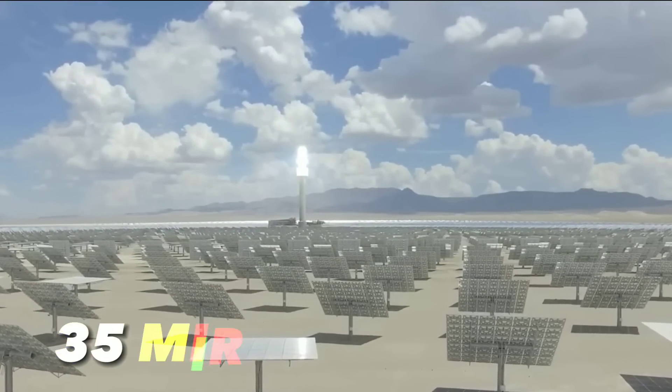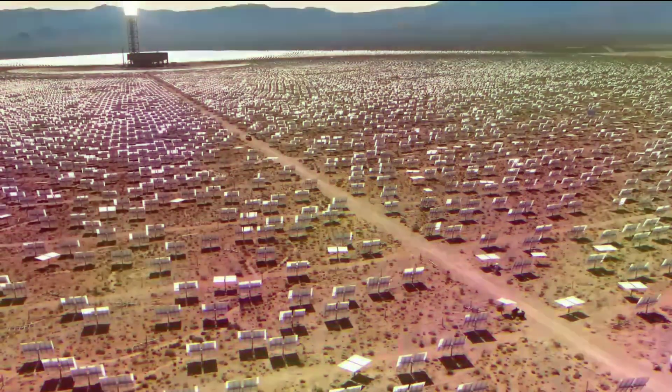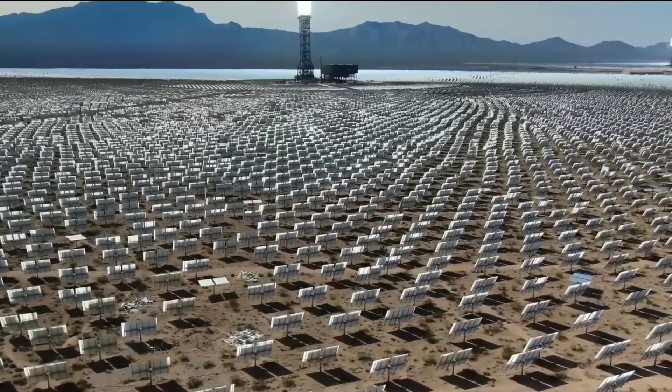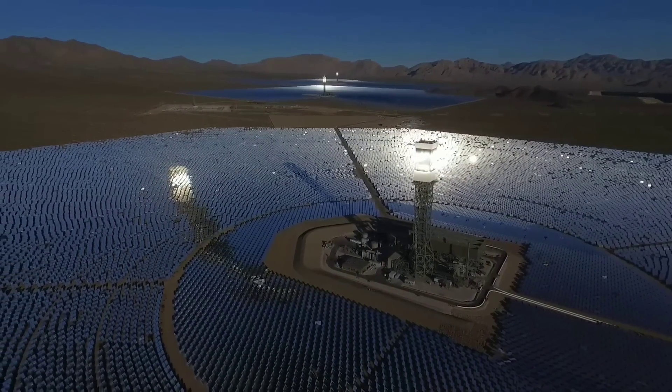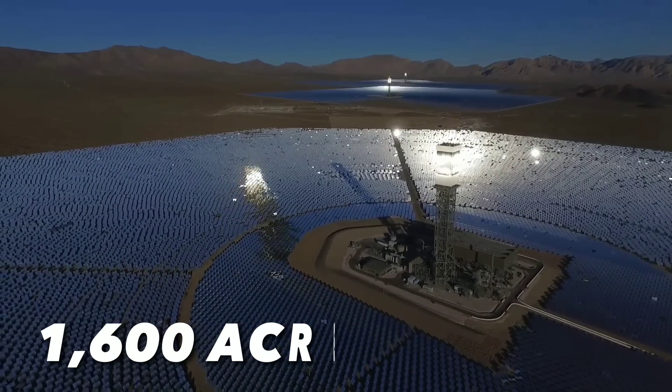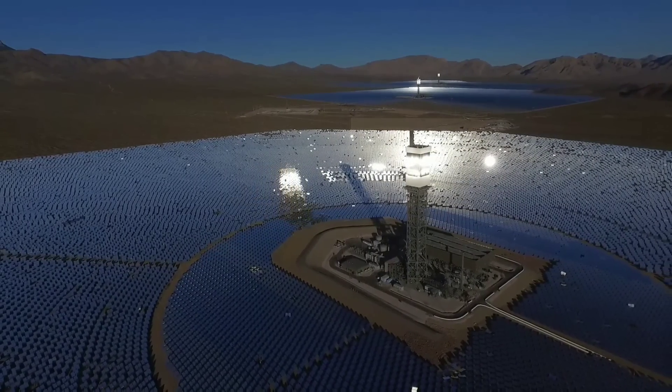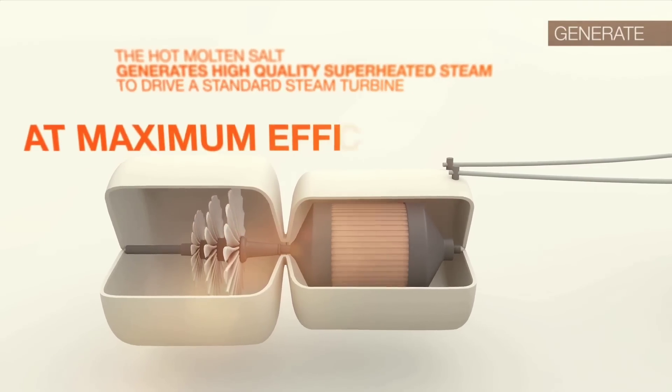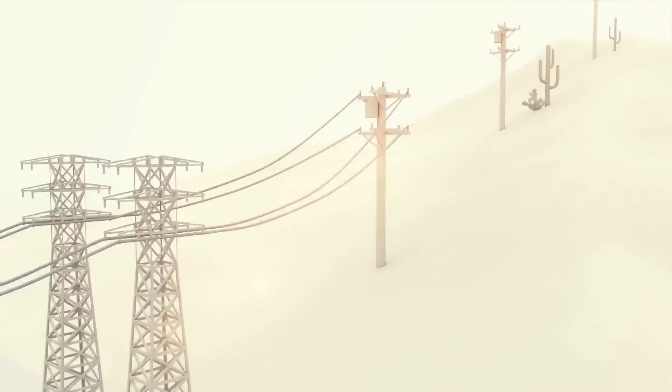Each heliostat had 35 mirrors, each measuring 6 x 6 feet, giving a total usable surface area of 1,245 square feet. The heliostats were arranged in a circular pattern around the tower, covering an area of about 1,600 acres. The plant was designed to operate for up to 12 hours without sunlight, using the stored heat in the molten salt tank. This way, it could provide reliable and clean energy to the grid, even at night or during cloudy days.